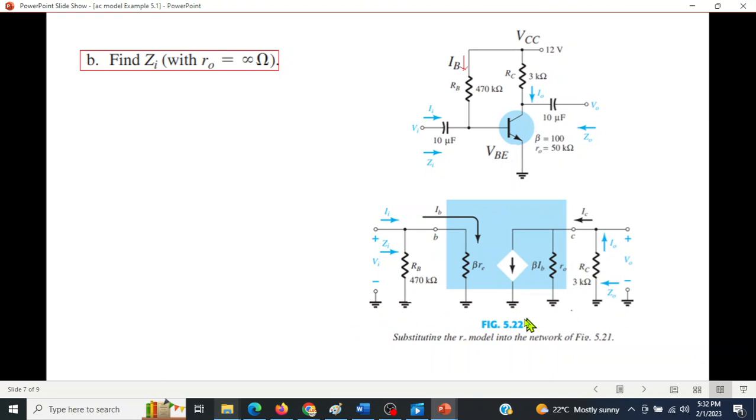If you see from here, Z_i is actually these two in parallel: R_B parallel βr_e. Let's calculate Z_i = R_B || βr_e. We have known r_e, beta is given and R_B is also given. Beta r_e first, it is 100 × 10.71 = 1071 Ω. Calculating in parallel, Z_i = 1.07 kΩ.